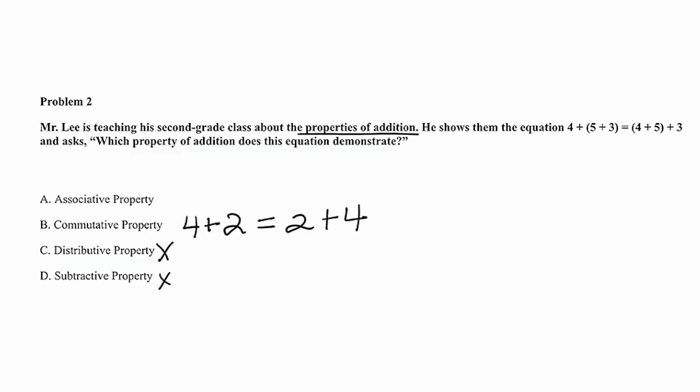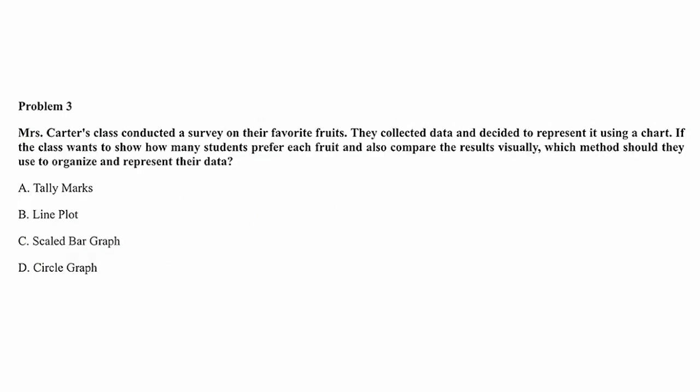This is an example of commutative property. The associative property differs from commutative property because it involves grouping. The equation in Mr. Lee's example demonstrates the associative property of addition, where you can change the grouping of numbers being added and it will not affect the sum.